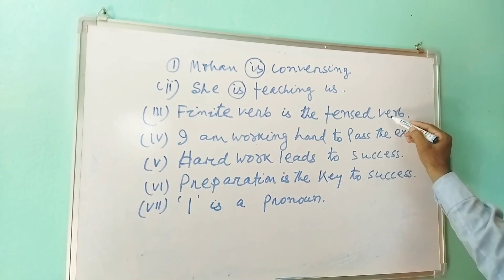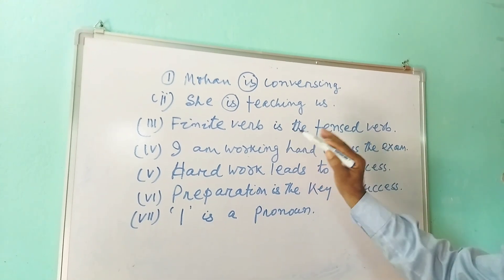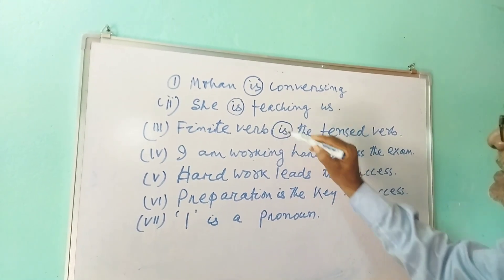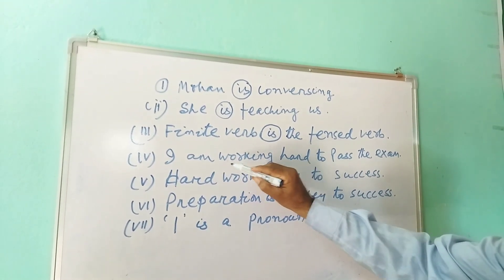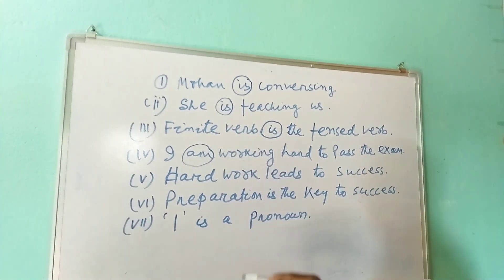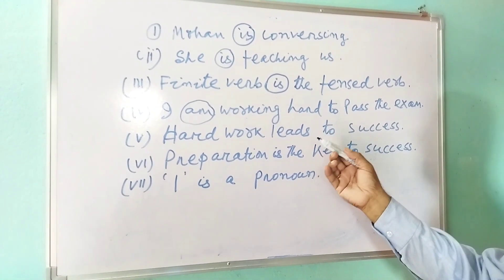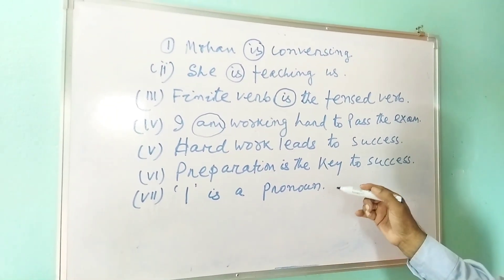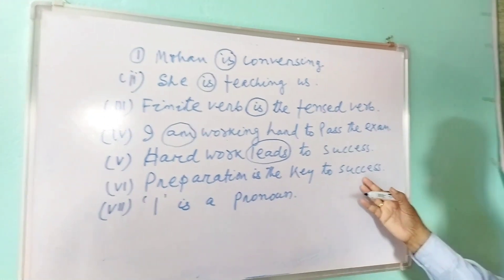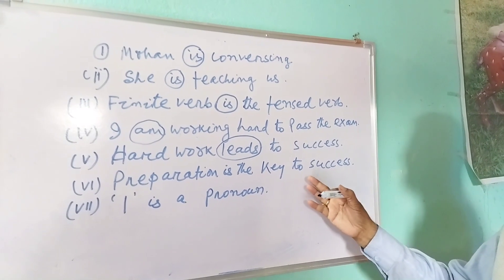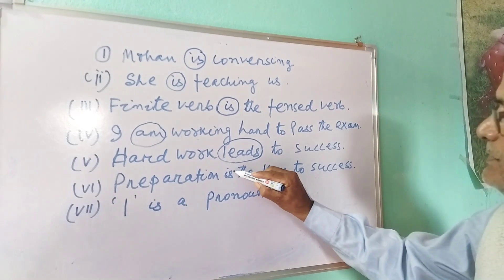In 'Mohan is conversing,' 'is' is the finite verb — it is the tensed verb, the only tensed verb. The only verb that is tensed is the finite verb. 'I am working hard to pass the examination' — the first verb 'am' is the finite verb. 'Hard work leads to success' — 'leads' is the finite verb. 'Preparation is the key to success' — the first verb 'is' is the finite verb.